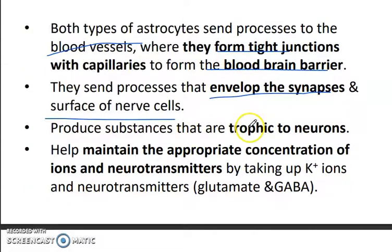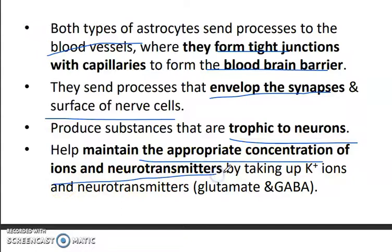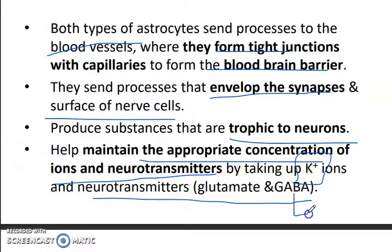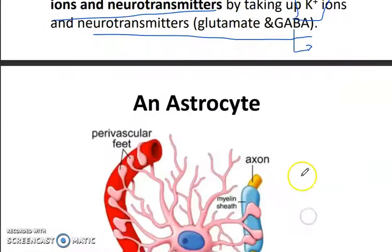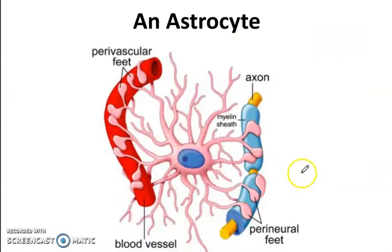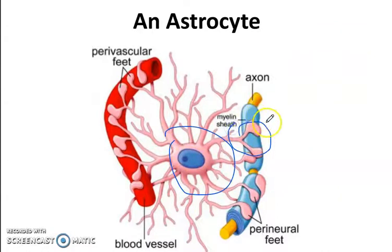Astrocytes produce substances that are trophic to neurons and help maintain the appropriate concentration of ions and neurotransmitters by taking up potassium ions and neurotransmitters such as glutamate and GABA (gamma-aminobutyric acid). Here you can see an exercise showing the processes clinging to the blood vessels and to the nerve cell itself.